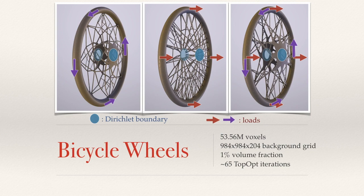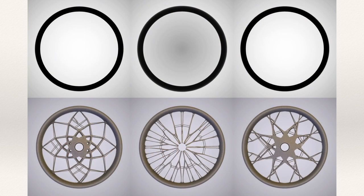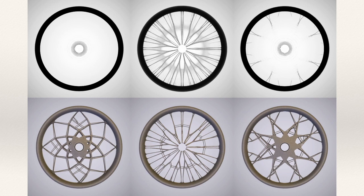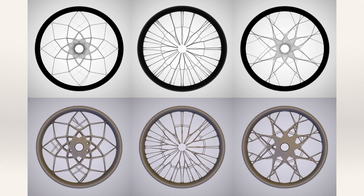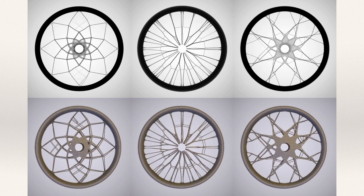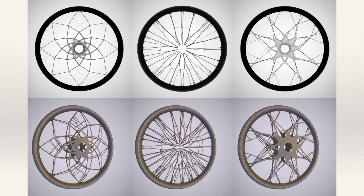These bicycle wheels are optimized to withstand different loads. The left two are optimized against twisting and shearing forces, respectively, and the right one is obtained when both objectives are applied simultaneously.